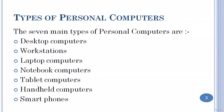In this lesson, we will be discussing the different types of personal computers including desktop computers. There are seven main types of personal computers: number one, desktop computers; number two, workstations; number three, laptop computers; number four, notebook computers; number five, tablet computers; number six, handheld computers; and number seven, smartphones.